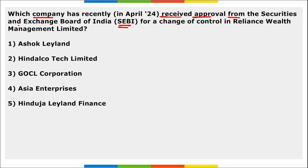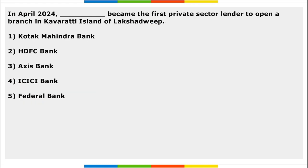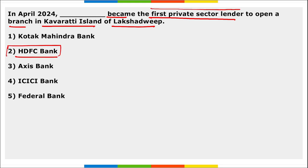Next: which company has recently received approval from SEBI for a change of control in Reliance Wealth Management Limited? It is Asia Enterprises. Asia Enterprises has received approval from SEBI for a change of control in Reliance Wealth Management Limited. In April, which bank became the first private sector lender to open a branch in Kavaratti, the island of Lakshadweep? It is HDFC Bank — it became the first private sector lender to operate a branch in Kavaratti, Lakshadweep.